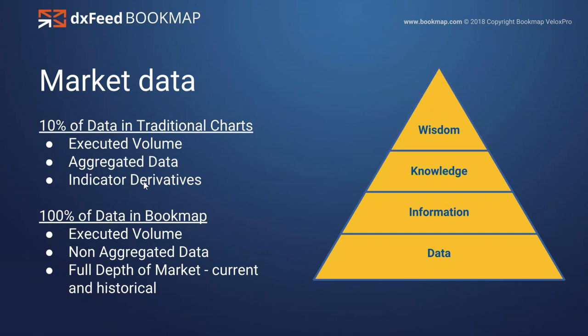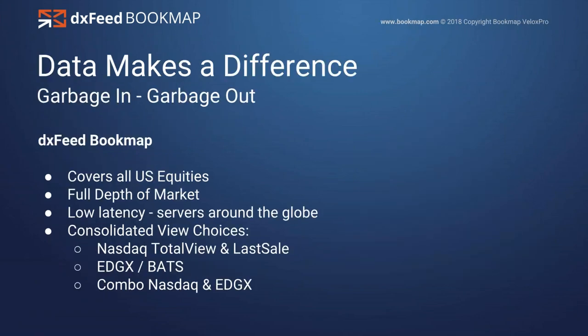Using that full depth of market, we're able to look at both current and historical data. Most of us look at higher timeframes, not just scalping — so what good is the DOM if you can only use it for the current market? With Bookmap, we're going to show you the entire market. This triangle is important: based on the data we receive, that's the foundation. From that data, we draw information, extrapolate knowledge, make trading decisions, and over time that leads to wisdom. It all starts with data.